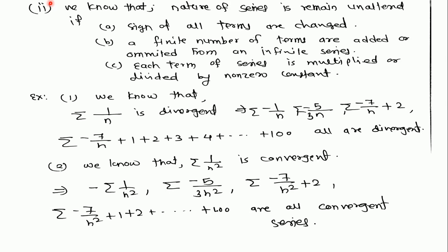Note — second note: the nature of a series remains unaltered if the sign of all terms of the series is changed, or if a finite number of terms are added or subtracted from an infinite series, or if each term of the series is multiplied or divided by a non-zero constant. We can apply this to directly check the convergence and divergence of a series.